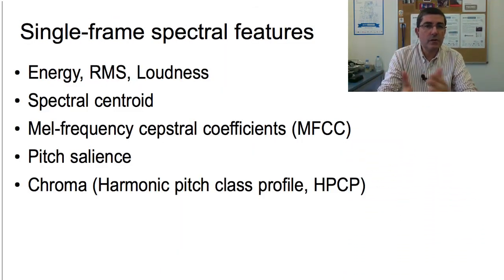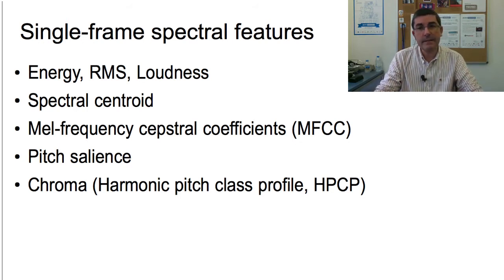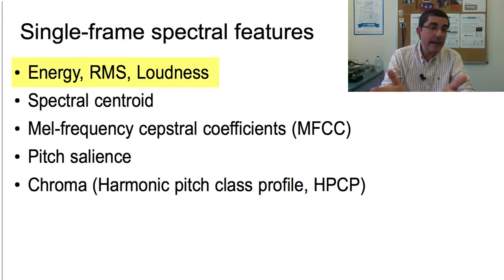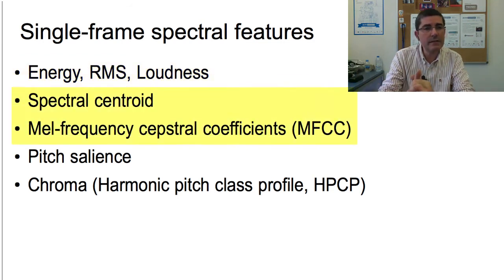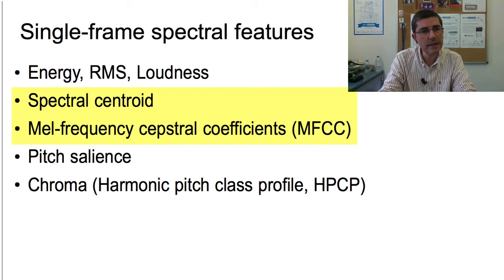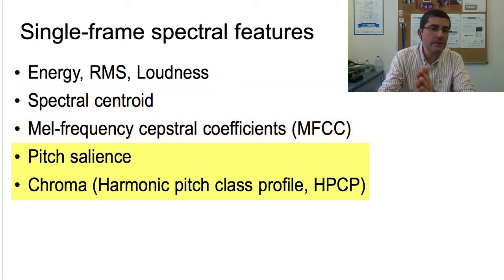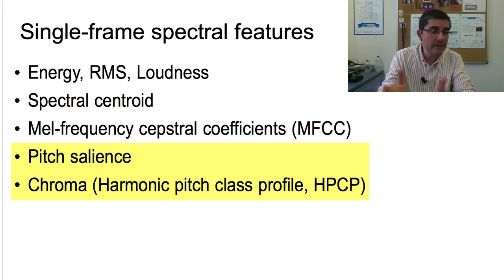Most features or descriptors are computed one frame at a time. Let me now discuss a few examples. We will first talk about descriptors related to energy, then descriptors related to spectral shape — including the spectral centroid and mel frequency cepstral coefficients — and then two features related to pitch: pitch salience and chroma features.